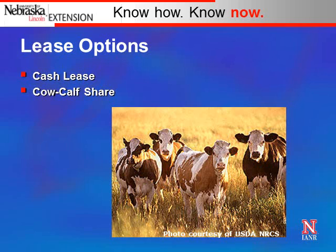Let's talk about the two options for leasing cows. First is what we call a cash lease, which is based on a cash arrangement where the cow owner gets paid a cash payment from the cow-calf operator. Or a cow-calf share arrangement where both the cow owner and the person operating those cows gets a share of the calf crop based on what each party contributes.